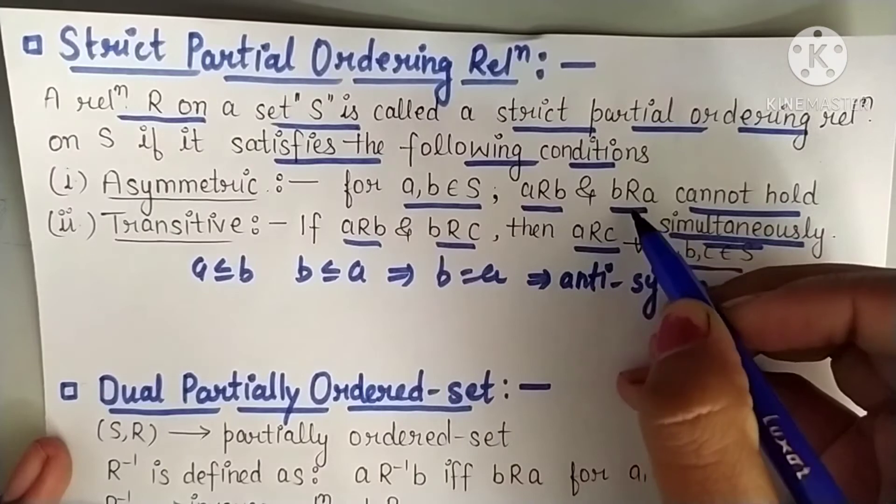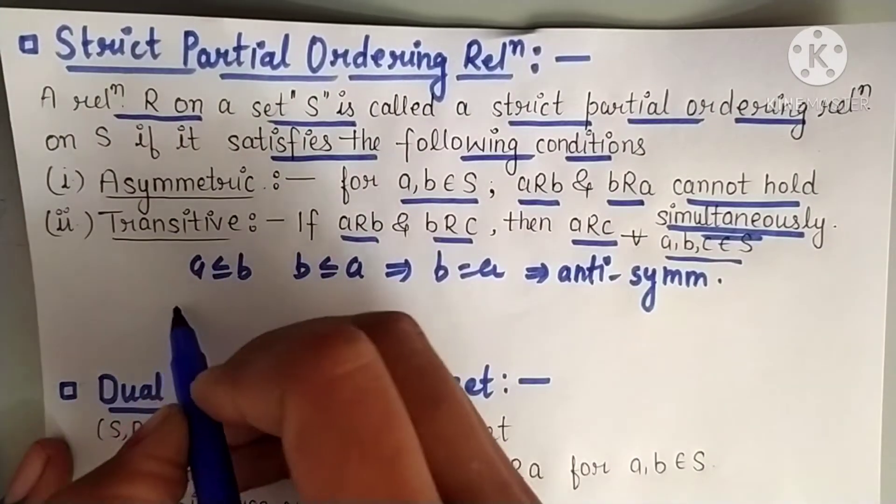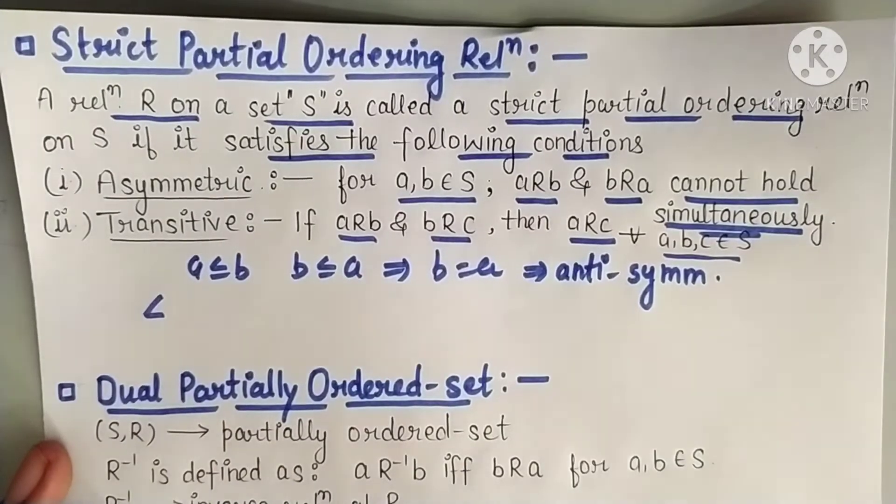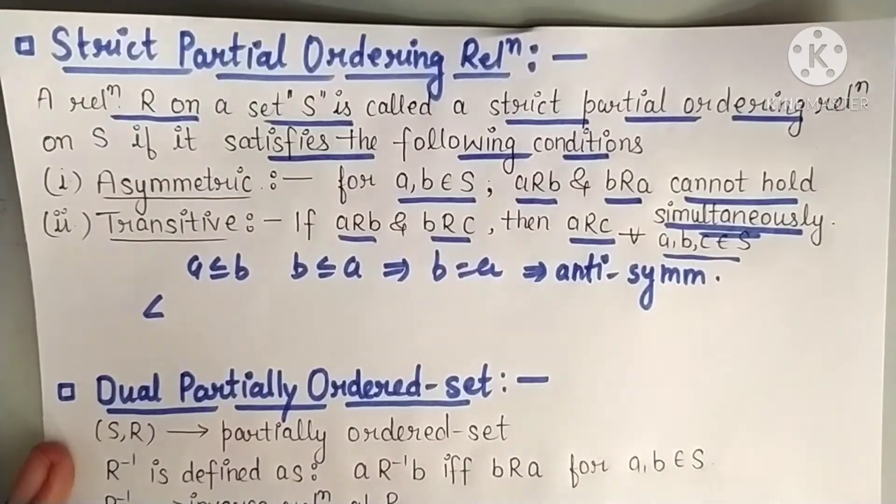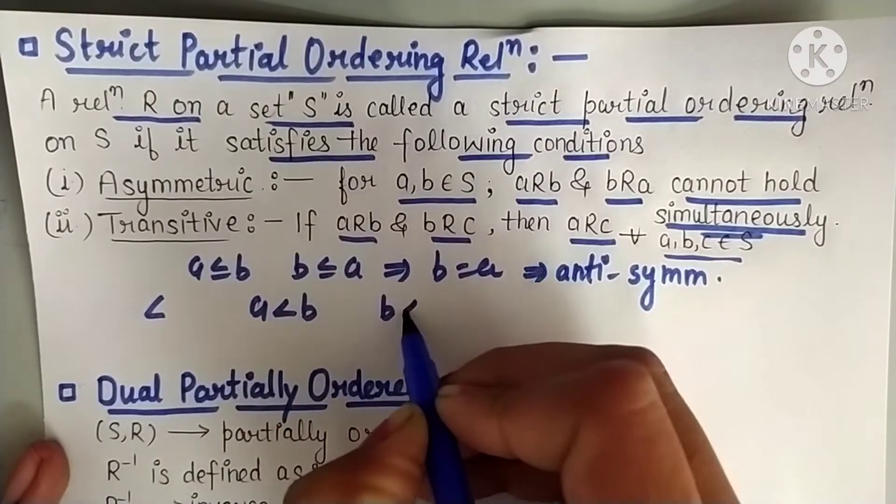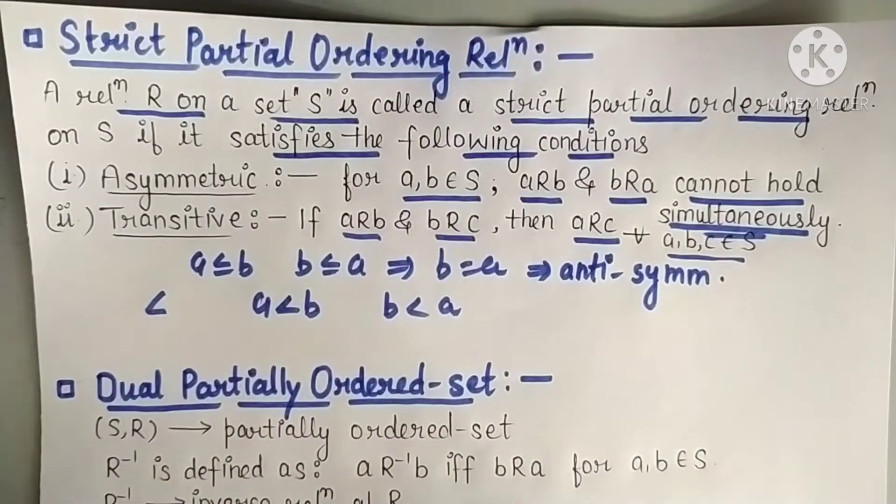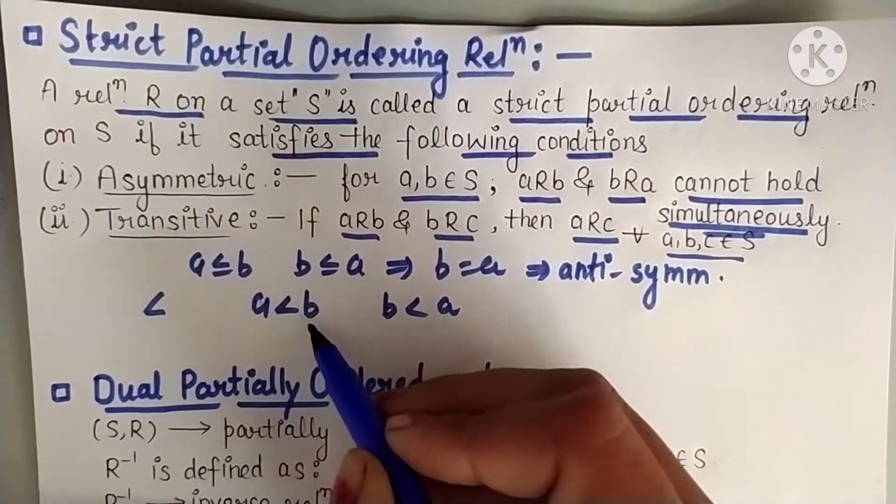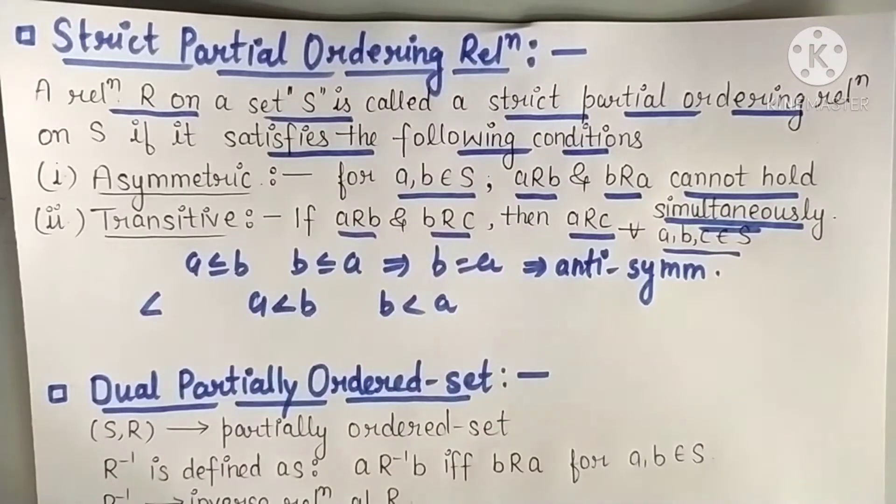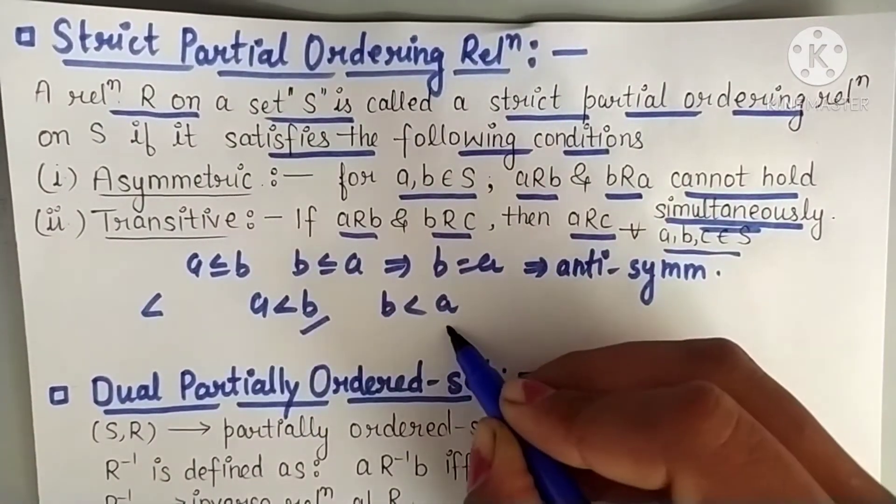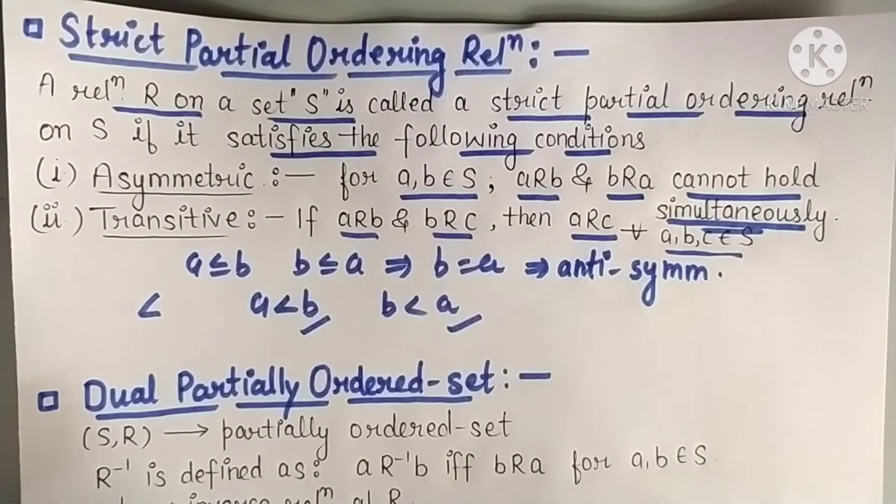In asymmetric, what happens? Both relations cannot hold together. For example, if I take the relation less than, not equals to, just less than relation. If I write a less than b and b less than a, is this possible? Both together? No, not possible. If a is smaller than b, then b cannot be smaller than a. That means either this condition will exist or this one will exist. So this is called asymmetric.